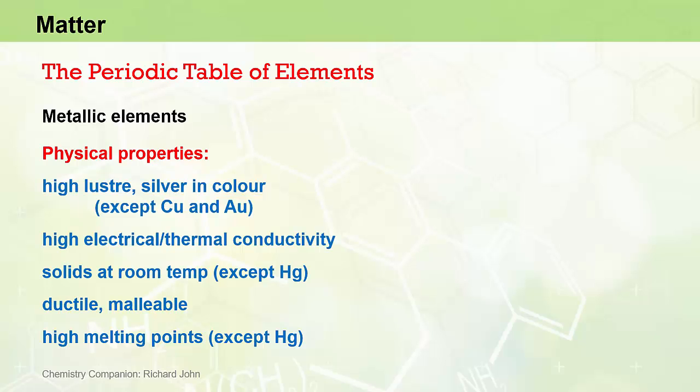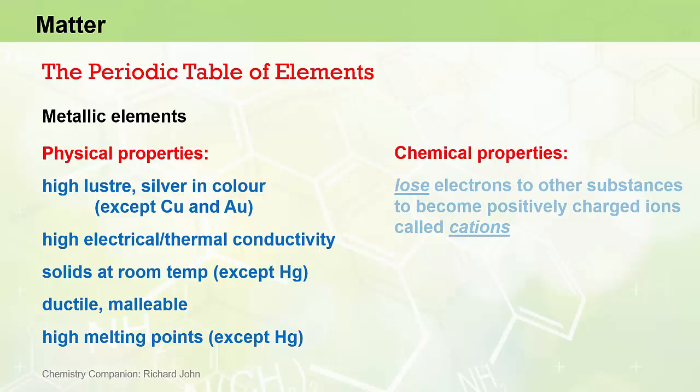The most important chemical properties that metals have is that they tend to lose electrons to other substances in chemical reactions to become positively charged ions, which we call cations, and more on that process in later videos.